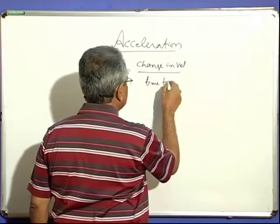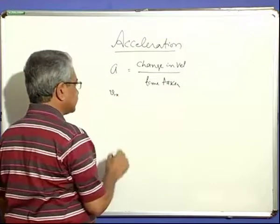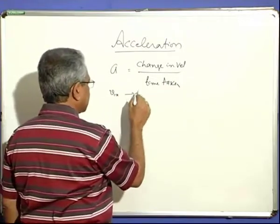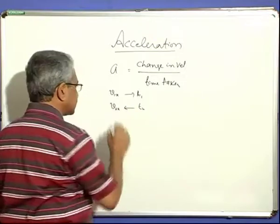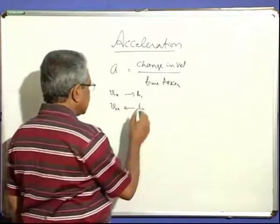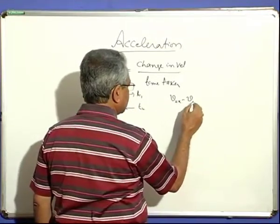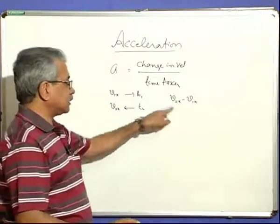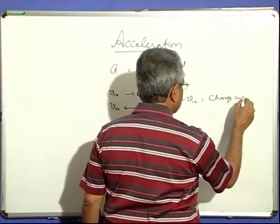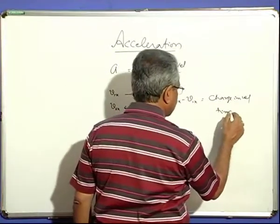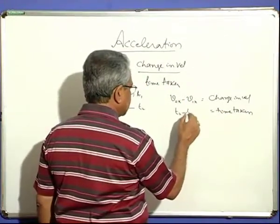Suppose a body is moving with velocity V1 in the X direction at time T1 seconds. After some time, at T2 seconds, the velocity becomes V2x. The change in velocity is V2 minus V1 — it was initially V1 and has become V2. The time interval taken is T2 minus T1.